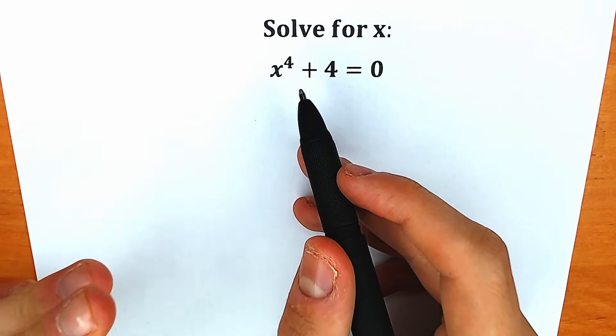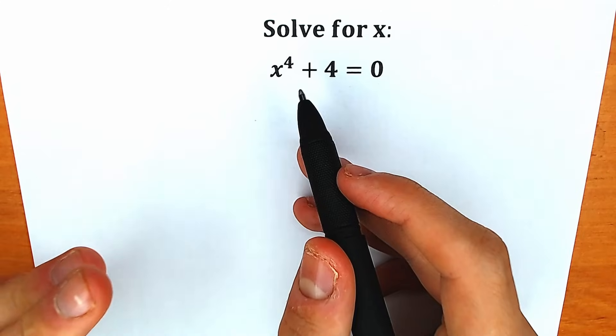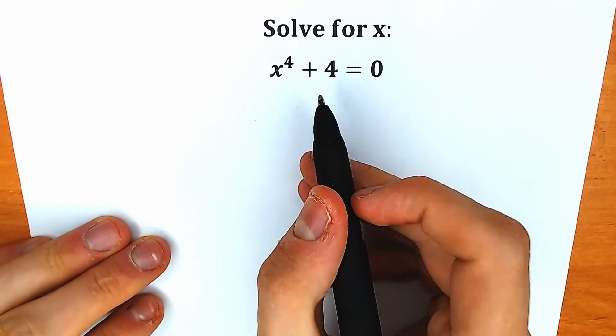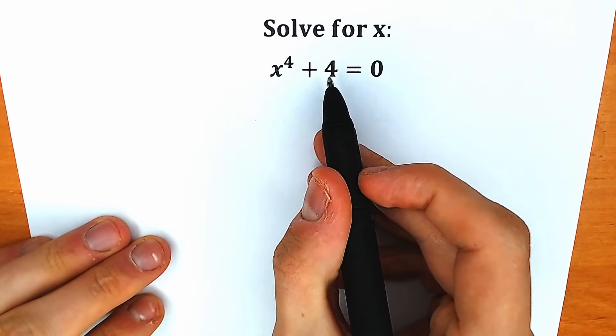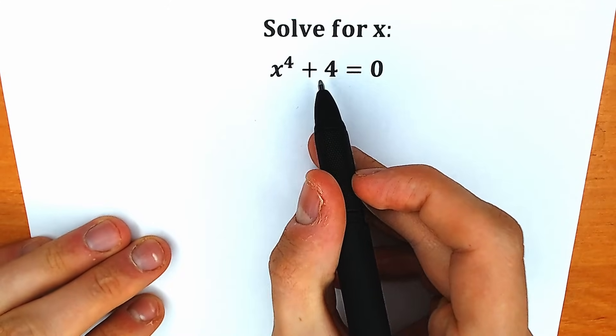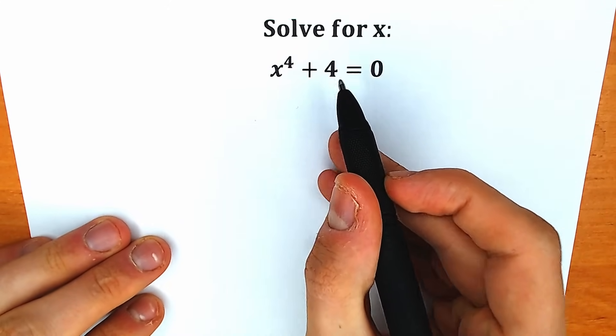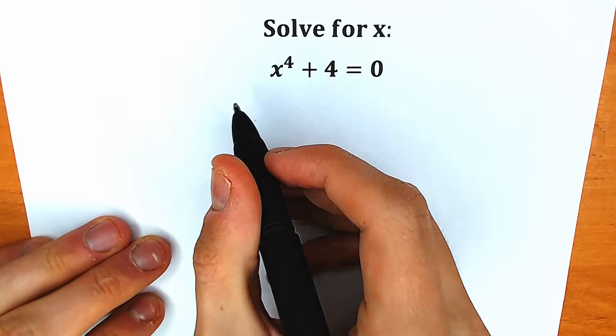I'm going to show you a really interesting and tricky approach. First of all, let's add 4x squared to this expression, and let's subtract 4x squared.